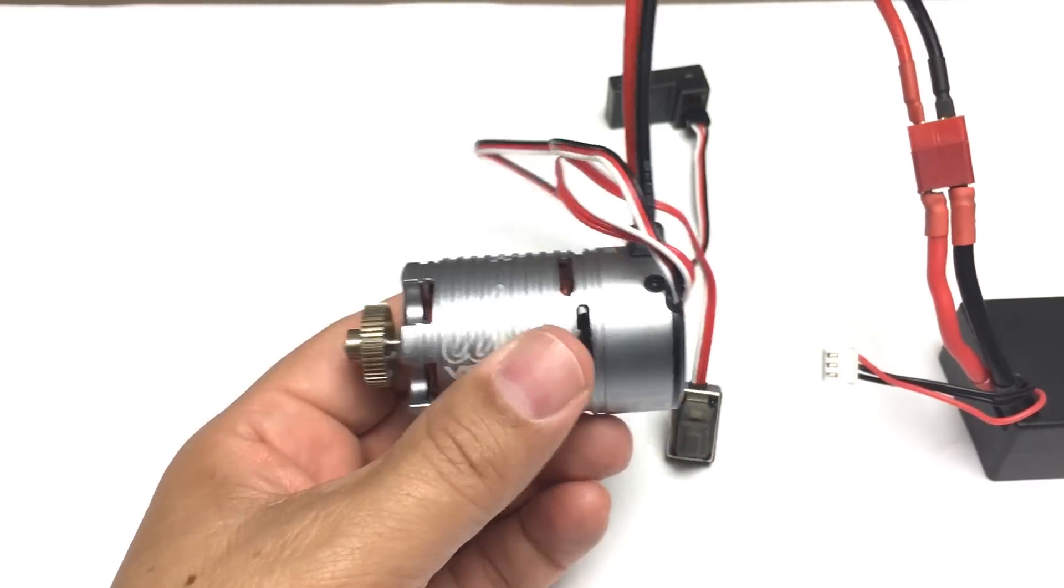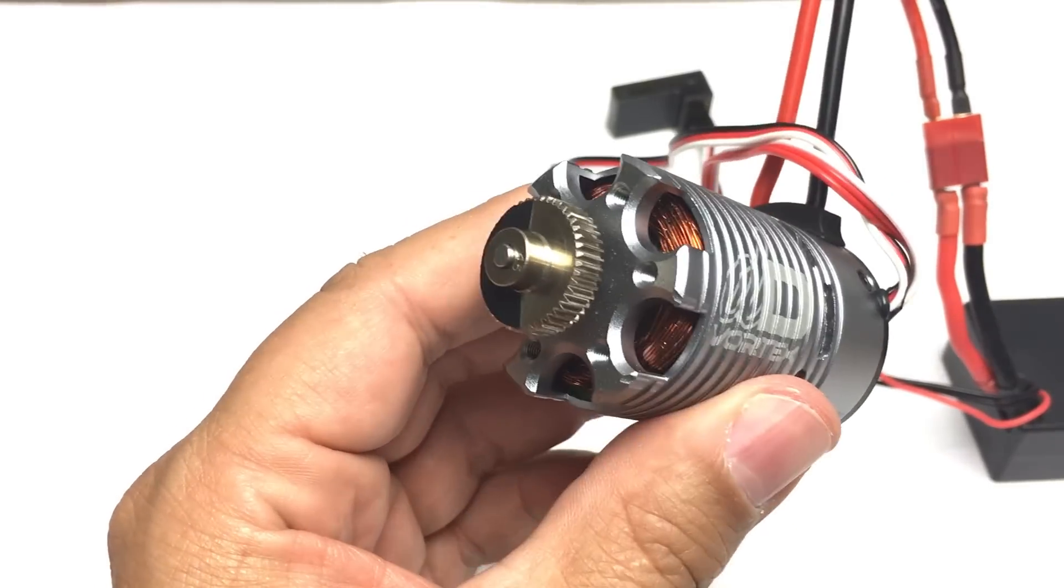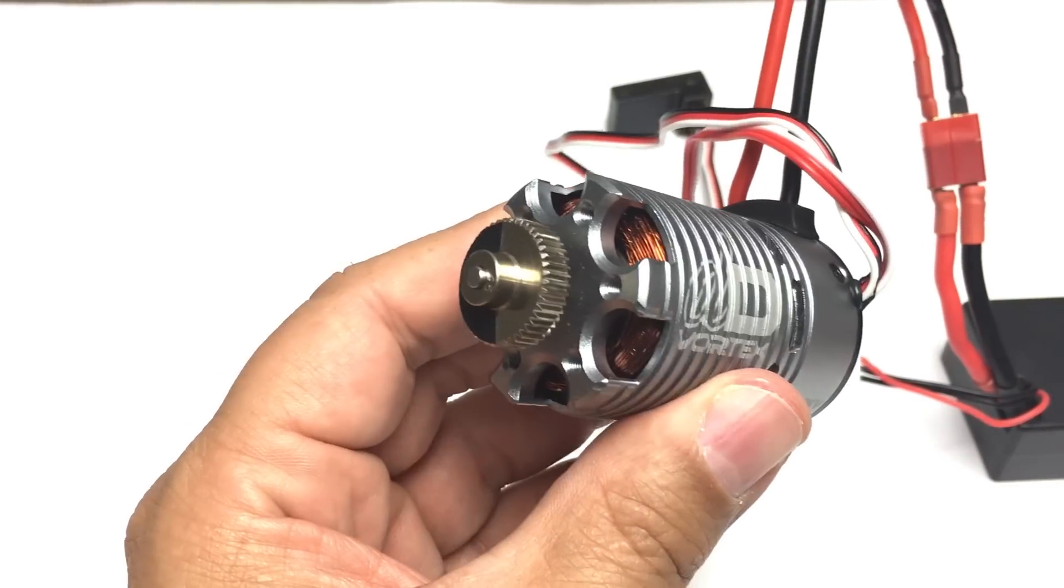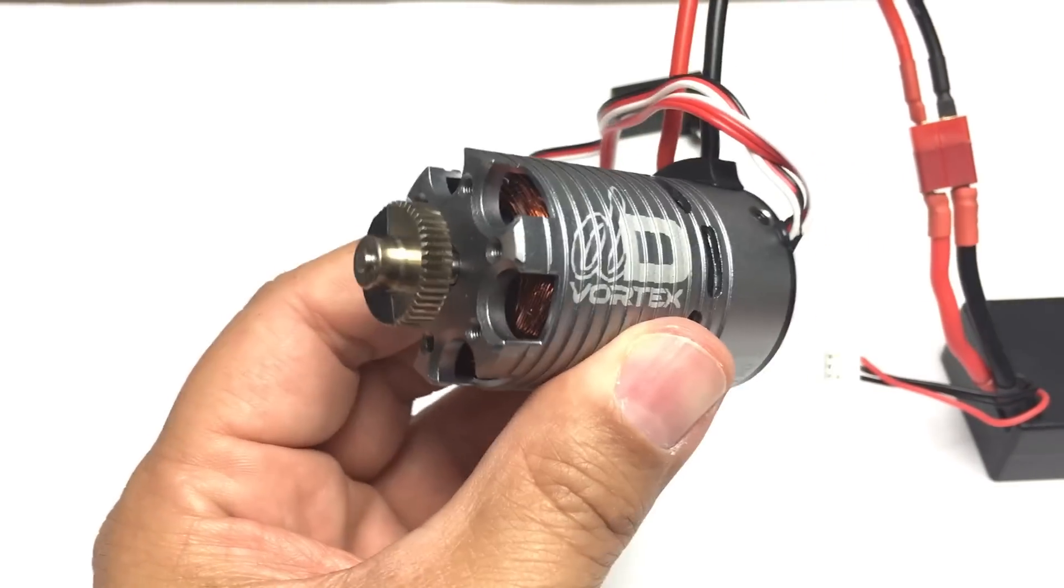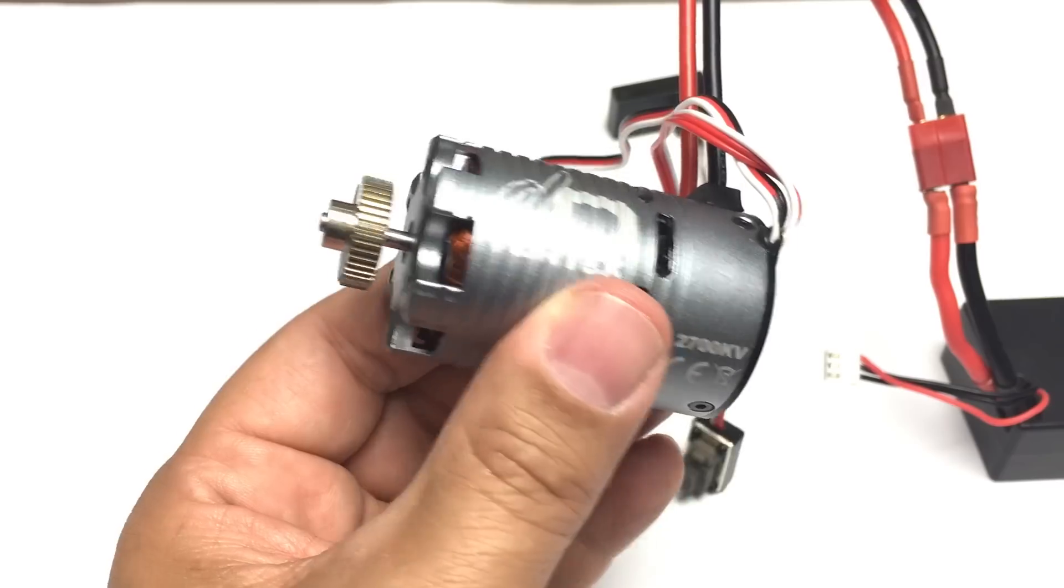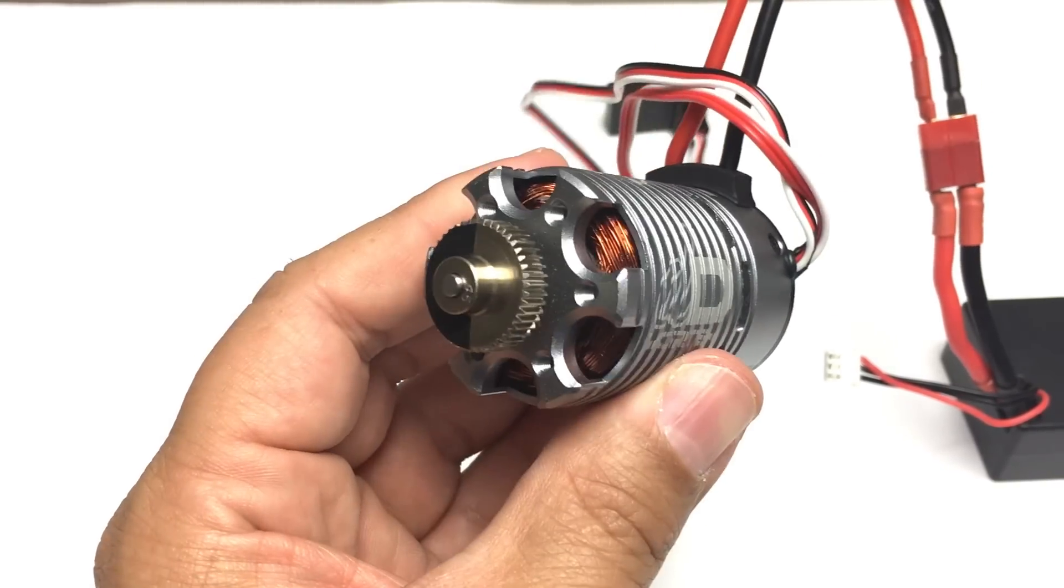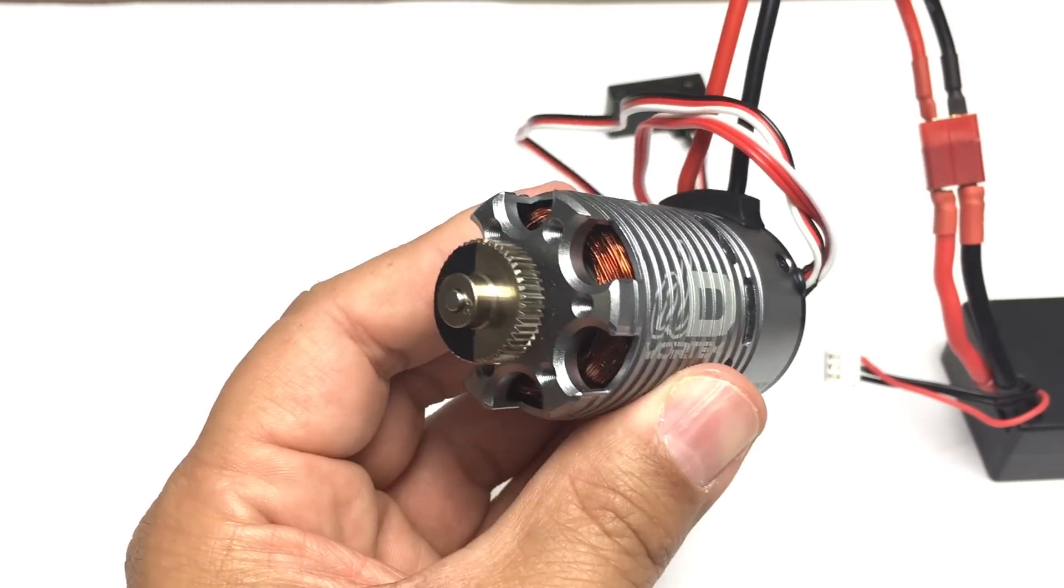Now with the speed control that's integrated, you do have adjustability. You can set your running mode for forward with brake or forward and reverse with brake. You've also got a low voltage cut off, you can set your start mode and punch and the braking strength off in that programming button on the on-off switch.